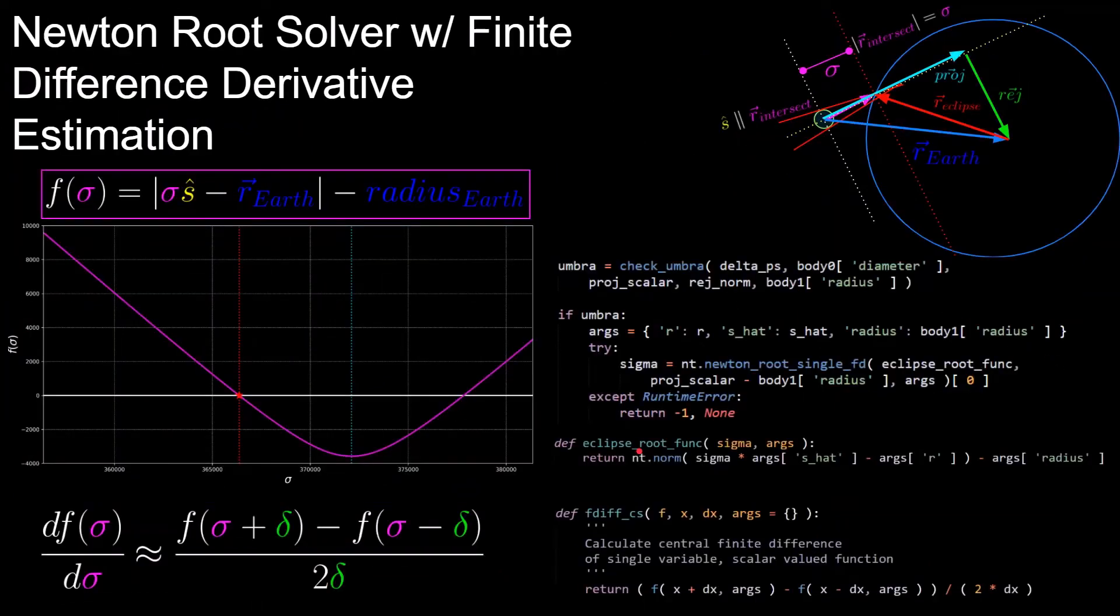We'll quickly go over root solvers here, but if you want more details I'll have a link in the description to another video where I go into more detail on them. So this plot is what the function looks like for a range of sigma values during the 2017 Great American Eclipse, and it's important to note here that this function has two solutions, but only one of them is correct for our purposes.